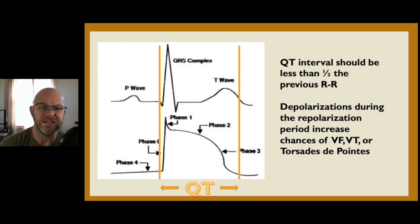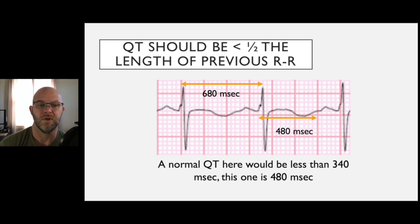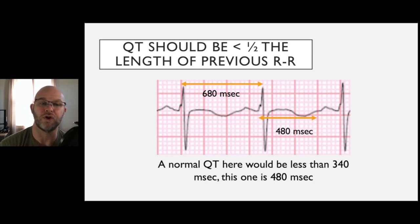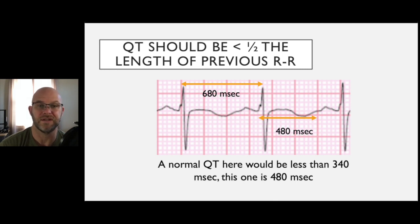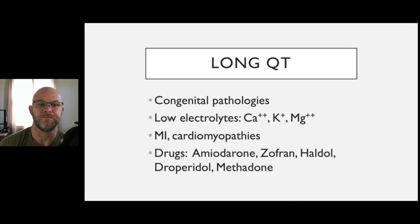The longer that QT segment is, it's kind of a landing zone — the more opportunity for a signal to fire inside of there, giving us that R-on-T phenomenon where that person can go into V-fib. Here's an example: looking at this QT, that T wave is really strung out. When you measure it, the QT is 480 milliseconds. Going back to the previous R-to-R, it's 680 milliseconds — so half of that is 340. As long as the QT is shorter than 340 we're okay. This one's 480 — that's a long QT.